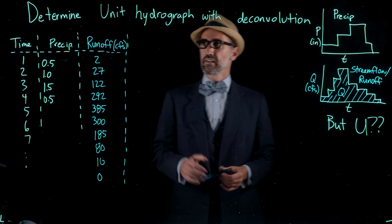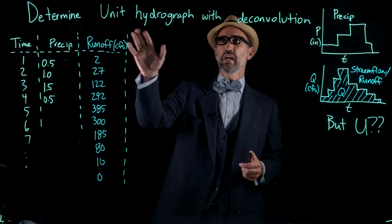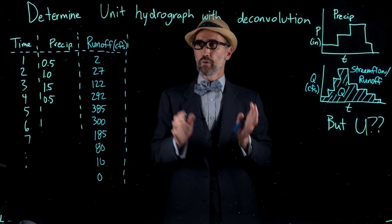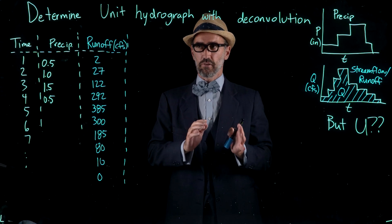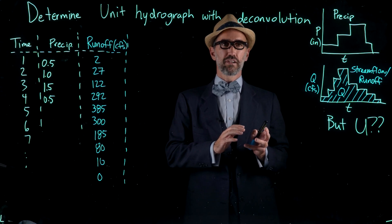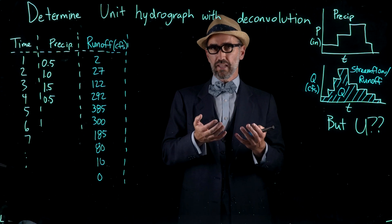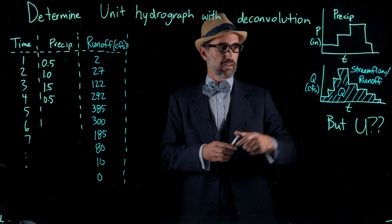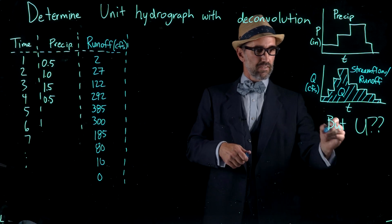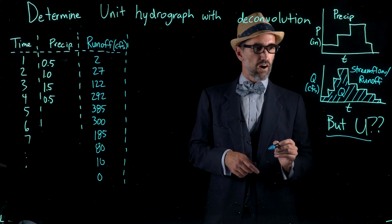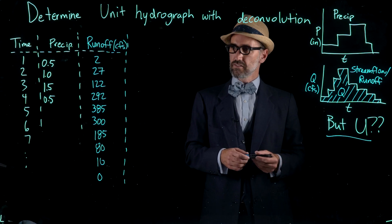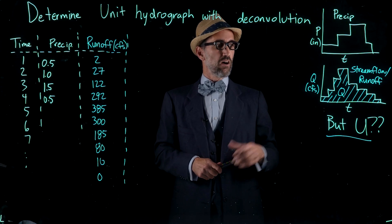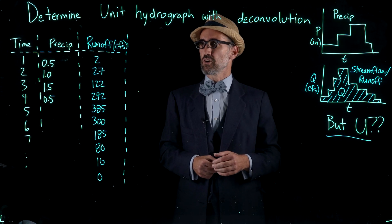In this video, you're going to learn how to determine a unit hydrograph with deconvolution. In the last video, we used the unit hydrograph to predict runoff. But in this video, what we're going to do is take two things we can observe in the field — precipitation and runoff — and from that, calculate our unit hydrograph, which is the symbol U here. So the core question here is: how can we predict the unit hydrograph?